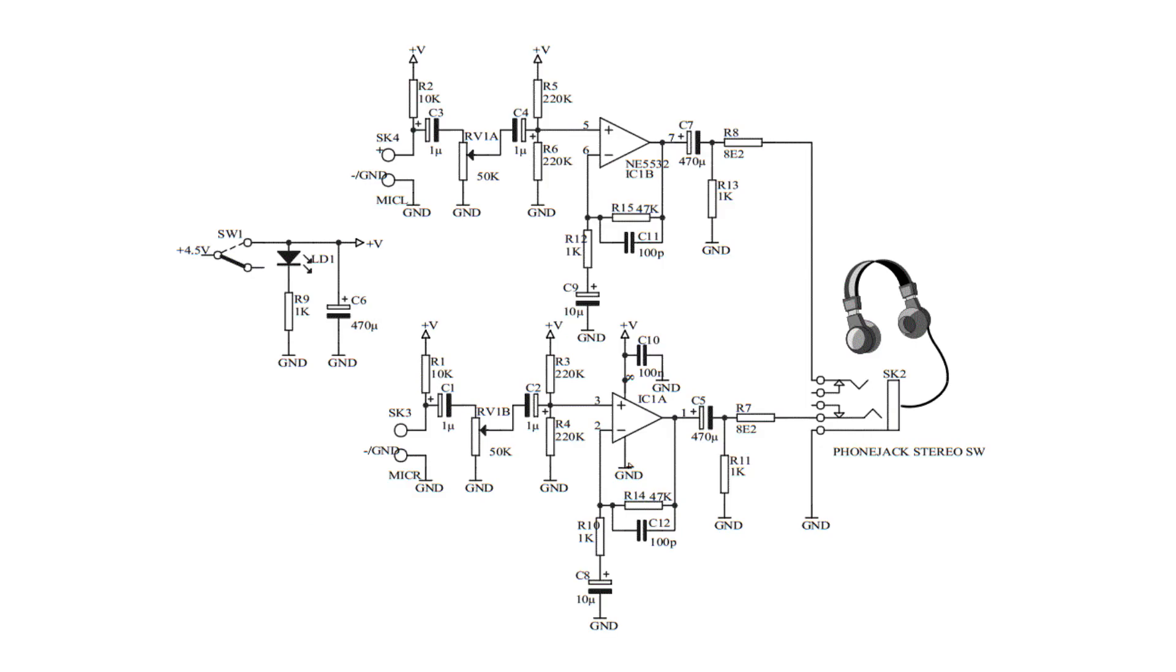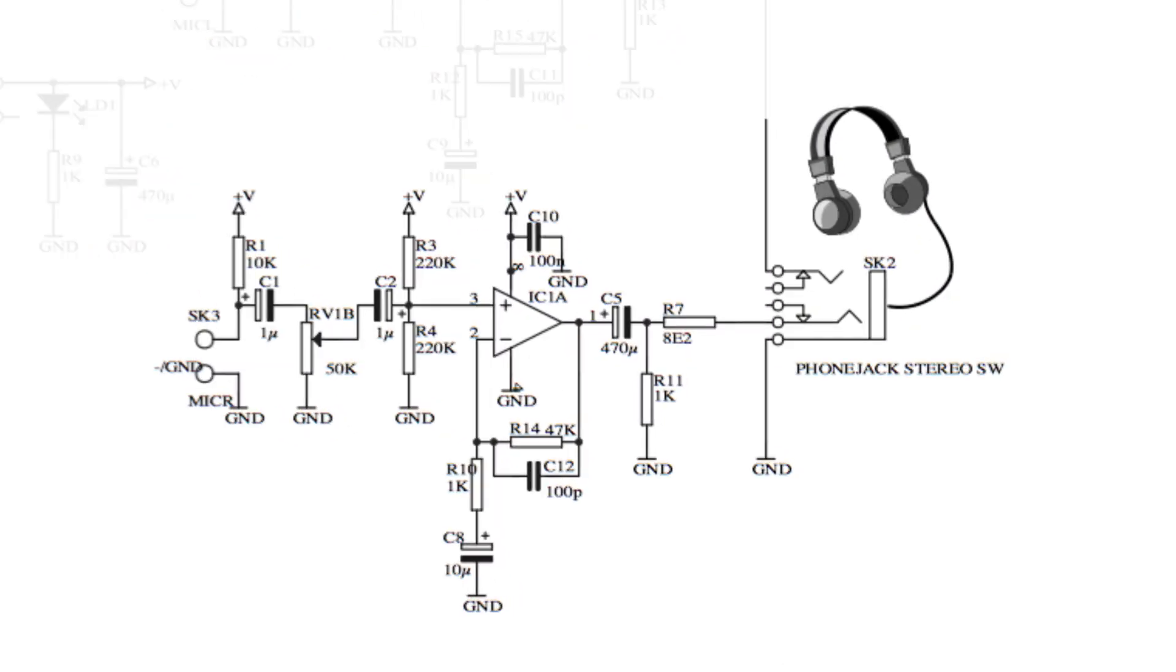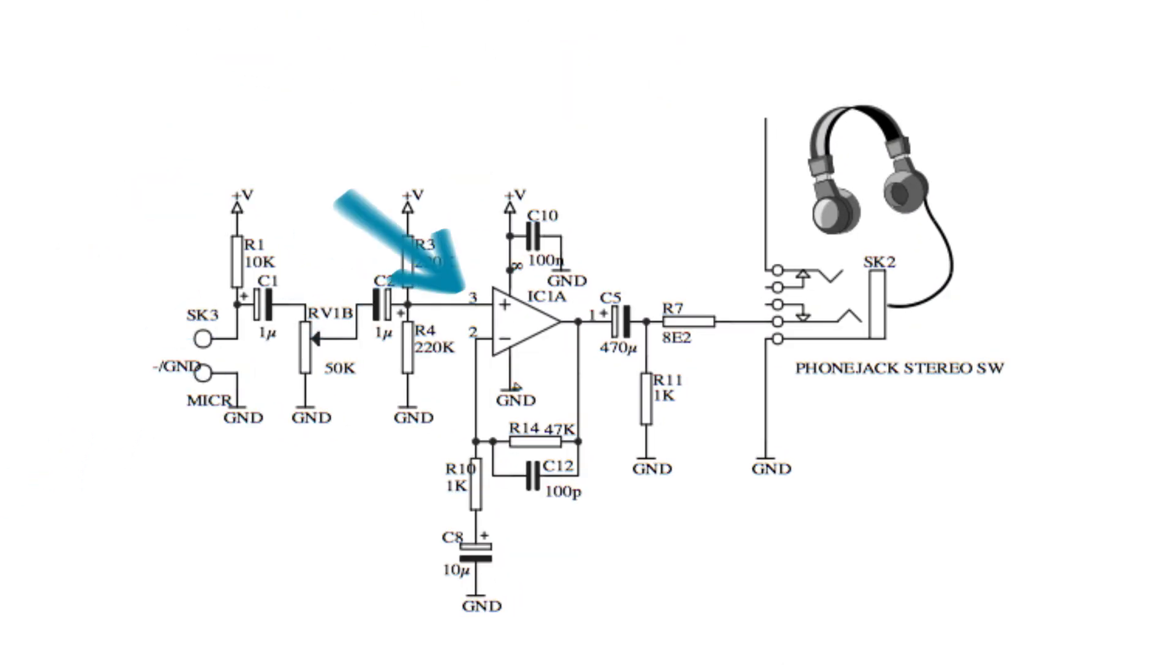Looking at the schematic we can see that each op amp has a near isolated circuit and that the two circuits are identical. The signal comes into each microphone, is processed through the op amp, and the output signals stay separate, providing the left and right channels for a stereo audio signal.